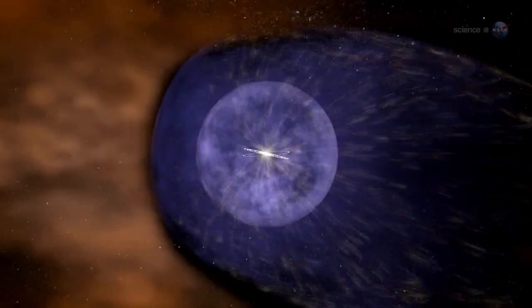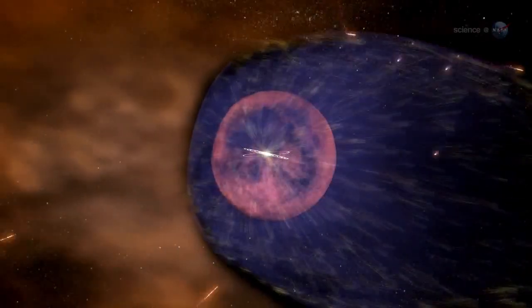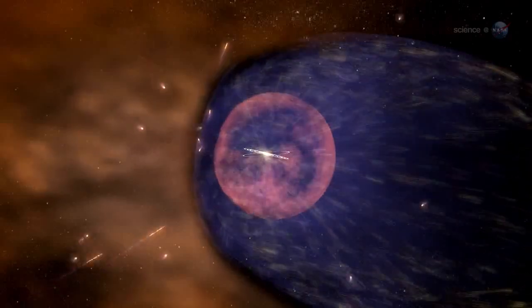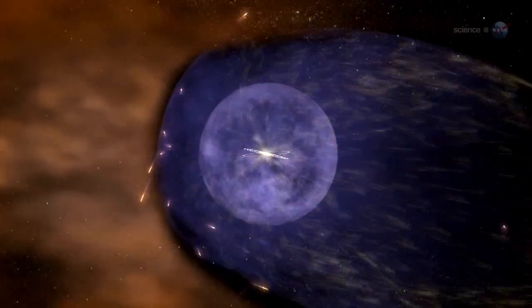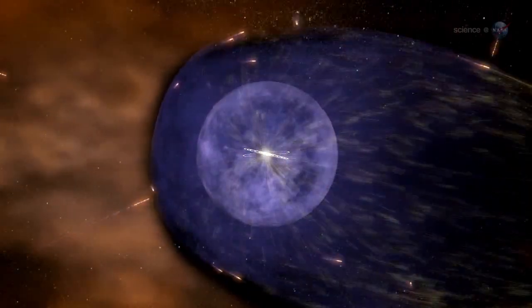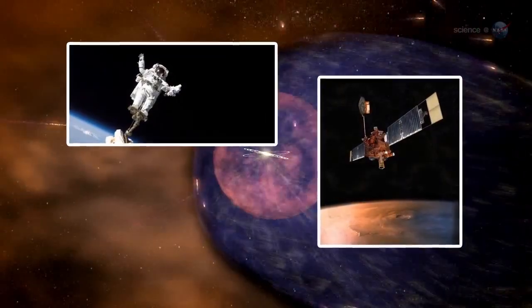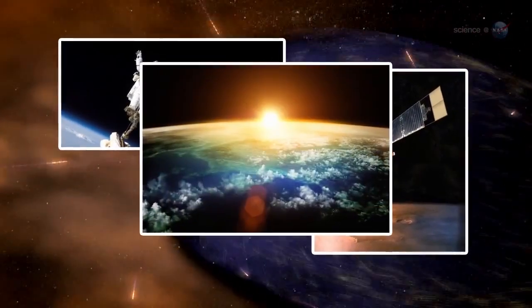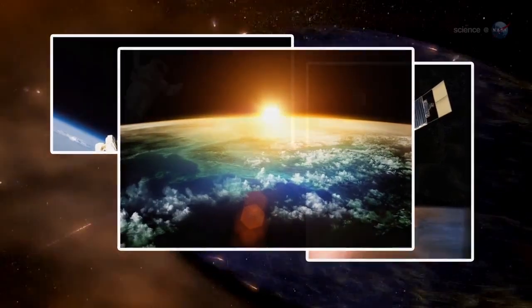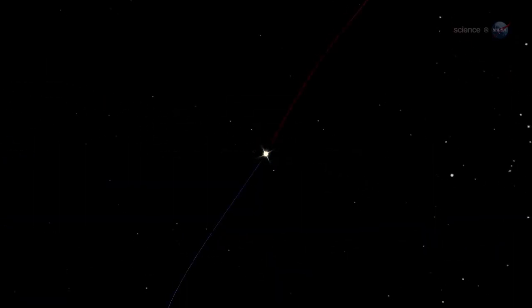Cosmic rays are also affected. These are high-energy particles accelerated to nearly light speed by supernova explosions and other violent events in the galaxy. Cosmic rays are a danger to astronauts and space probes, and some researchers say they might affect the cloudiness and climate of Earth.